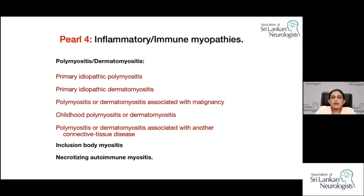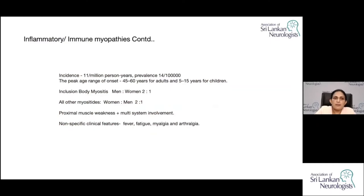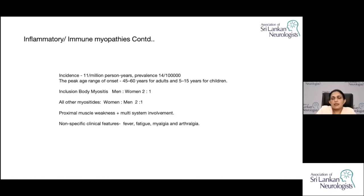The spectrum of inflammatory myopathies has three major categories: the polymyositis/dermatomyositis spectrum, inclusion body myositis, and necrotizing autoimmune myopathies. The hallmark is inflammation with systemic involvement. These are rare entities with a prevalence of 14 per 100,000 population. Peak age of onset is in the 50s, and in children it occurs between 5 and 15 years. Apart from inclusion body myositis, which is more common in males, all other myositides are twice as common in females. Non-specific clinical features include constitutional symptoms such as fever, fatigue, myalgia, and arthralgia.